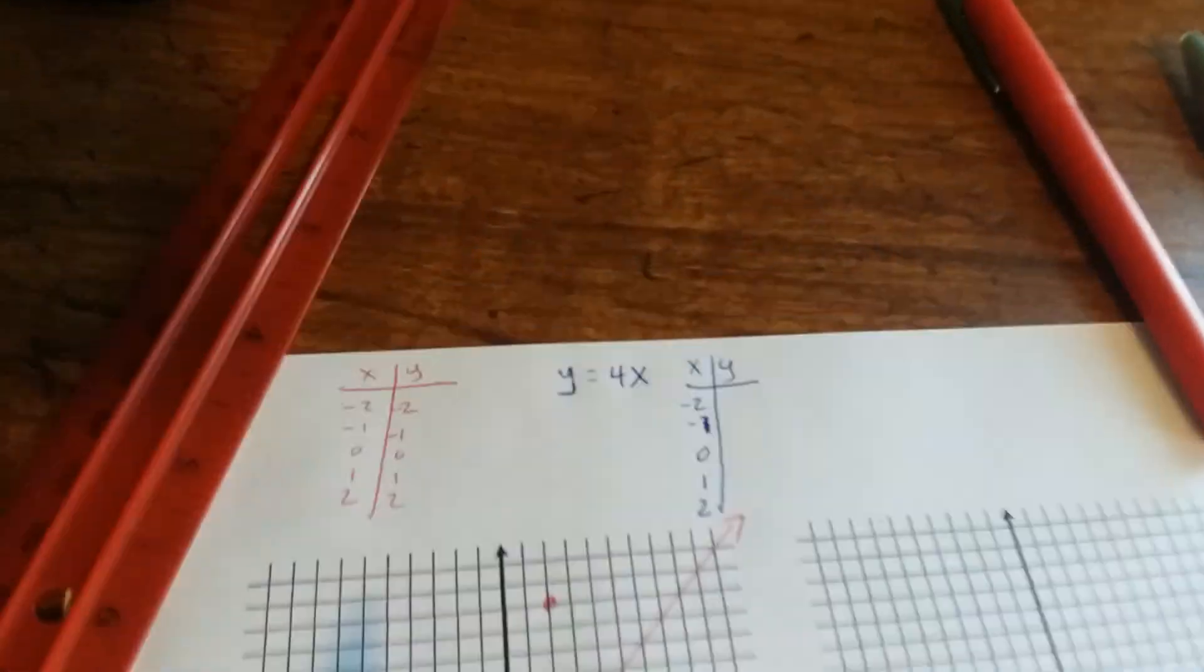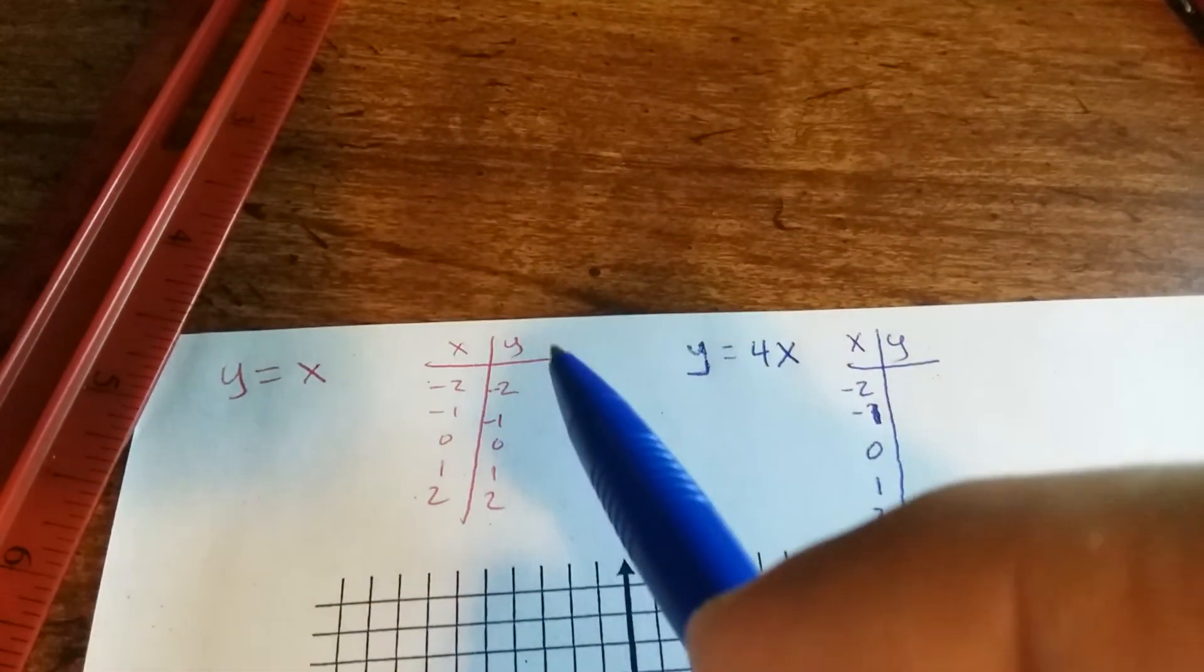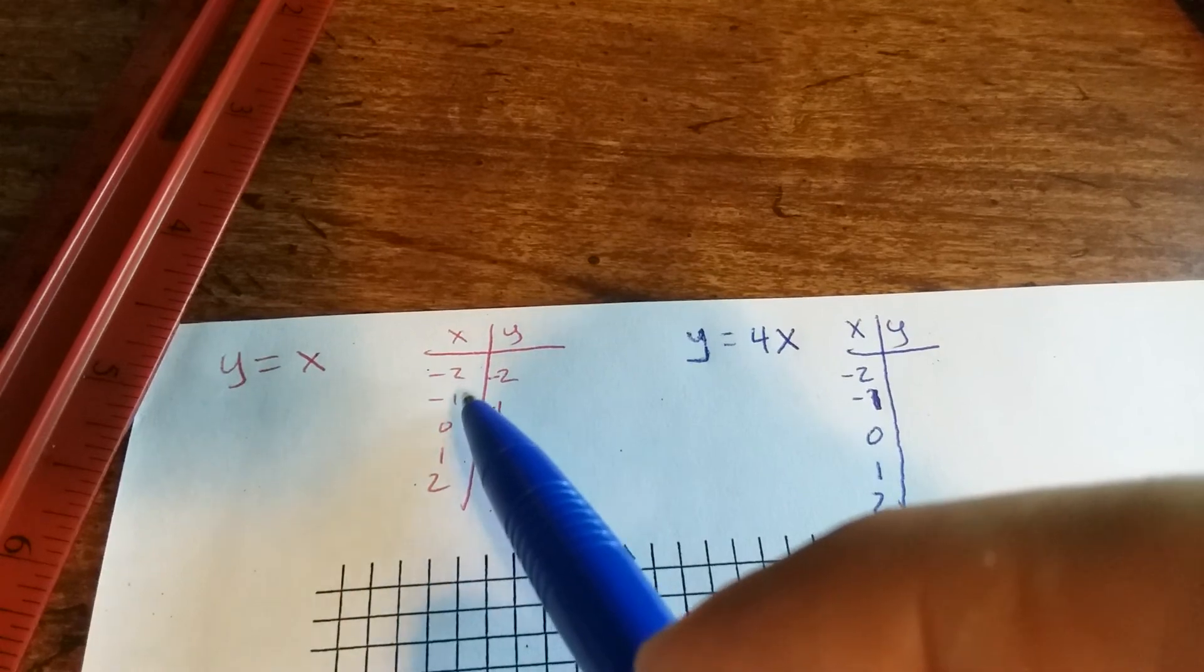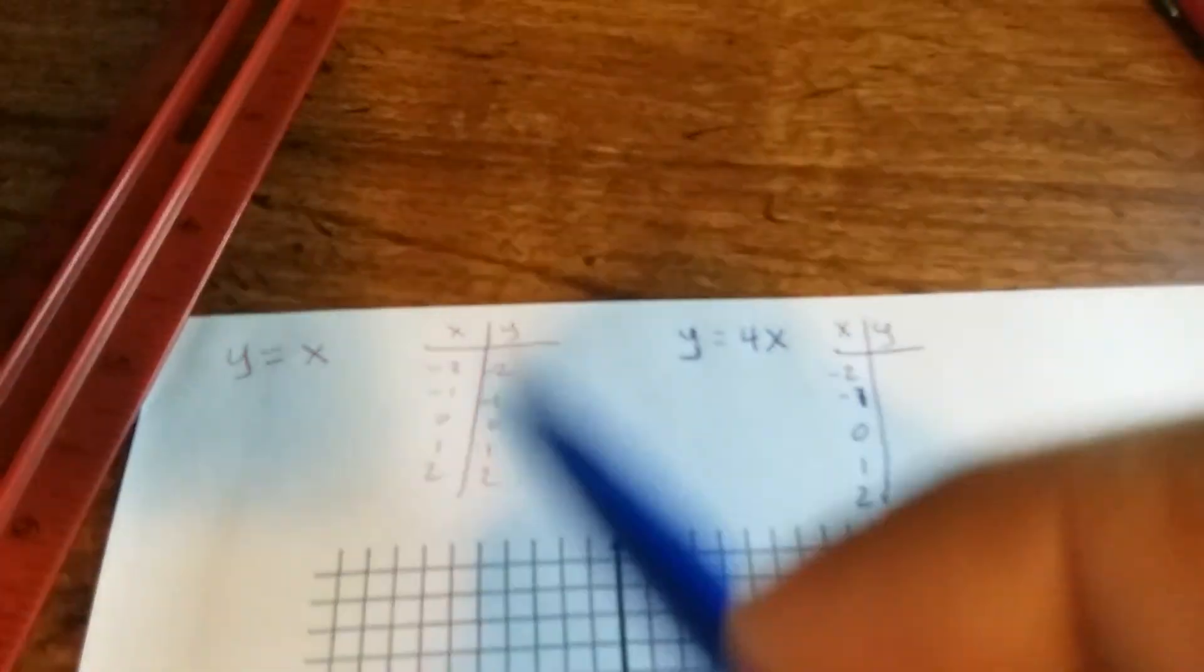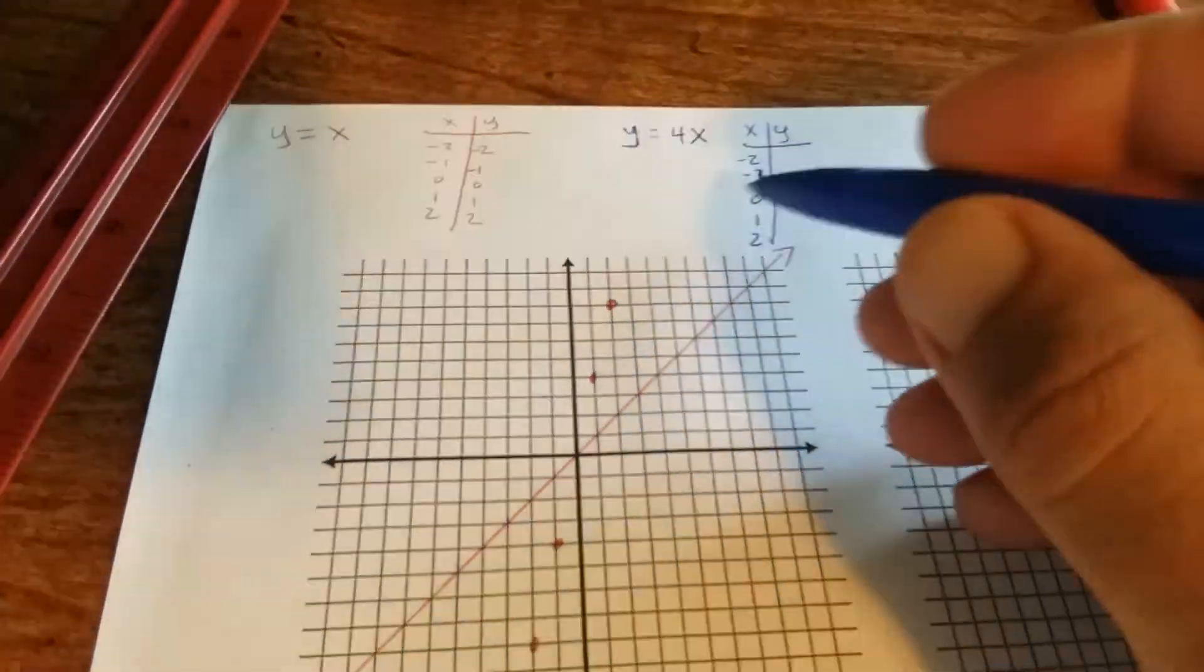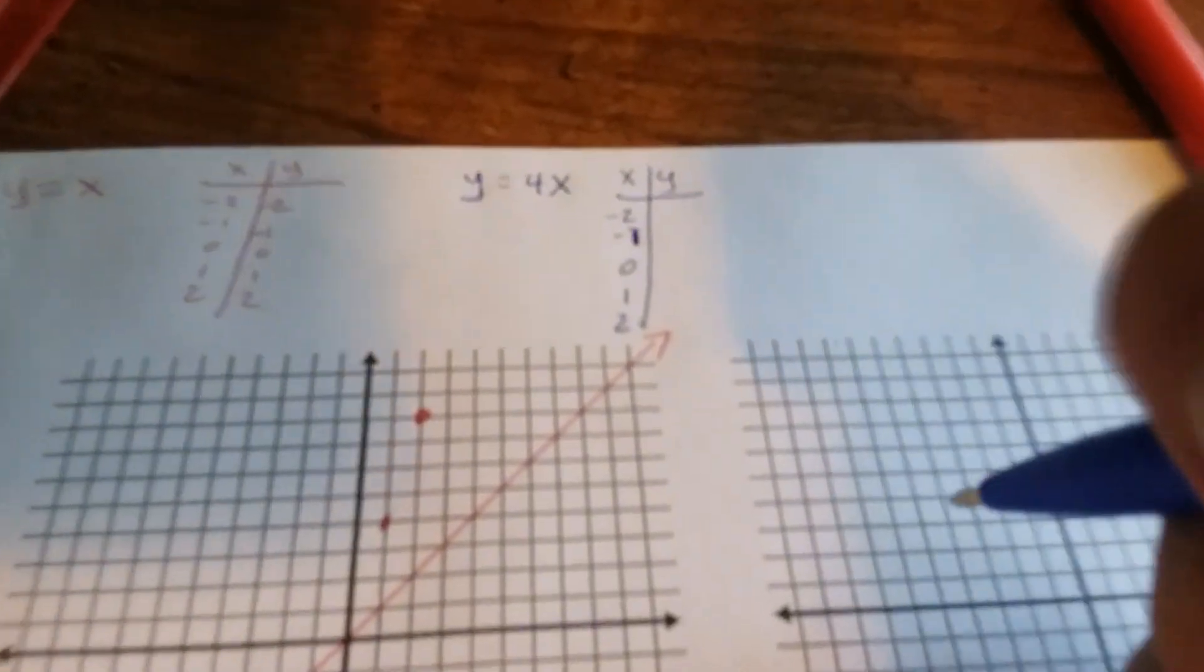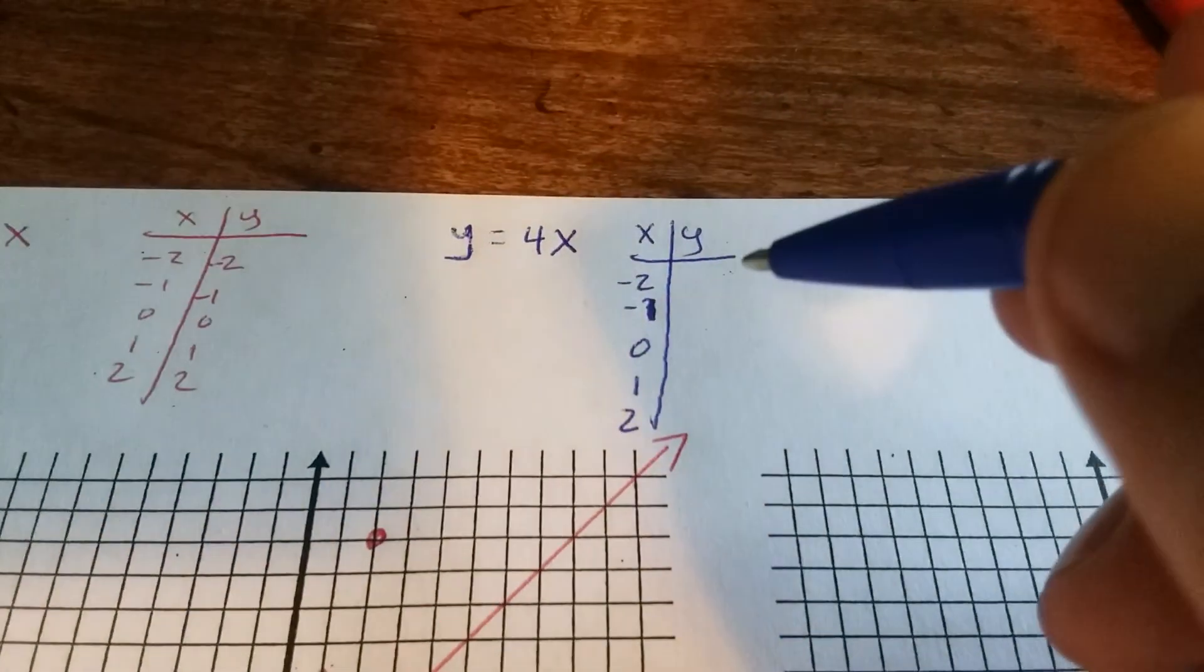So if you were to graph in red here, I graphed y equals x. I made a table. If x is negative 2, y is negative 2. If x is negative 1, y is negative 1, so on. I made a table, plotted my points, and graphed it. In the blue here, we have y equals 4x. So you can make a table and plot points and graph equations that way.